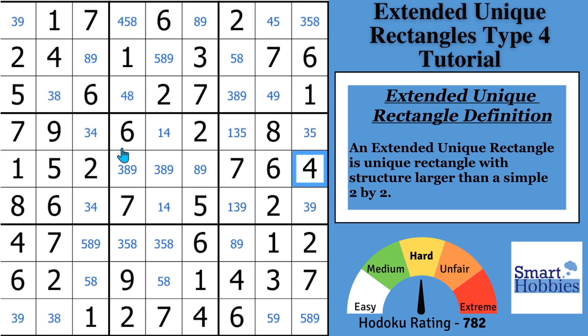The definition, extended unique rectangle, is a unique rectangle with a structure larger than a simple 2x2. So you usually see 2x3, like two rows and three columns. Or it could even be a 3x3 in theory.